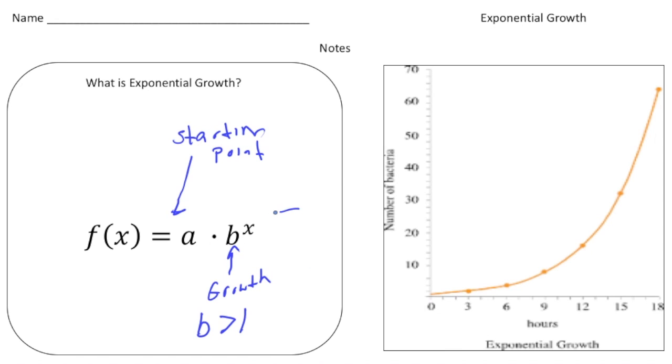And then the x is just the exponent. All right, this right here is key. For the graph to be an exponential growth function, that b value has to be greater than one.